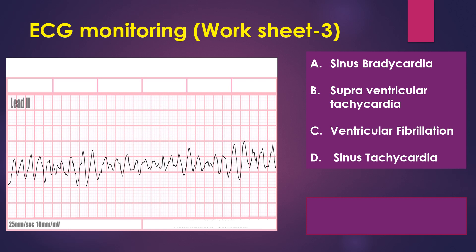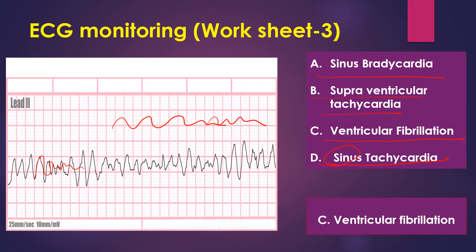Next, you have to interpret the ECG. Is it sinus bradycardia? No, because it has no proper QRS complex. Is it supraventricular tachycardia? No, because there is no P wave overlapping the QRS complex. Is it sinus tachycardia? No, because the P wave is not present. So the answer is ventricular fibrillation — the waves are fibrillating, irregular, as I told you previously.